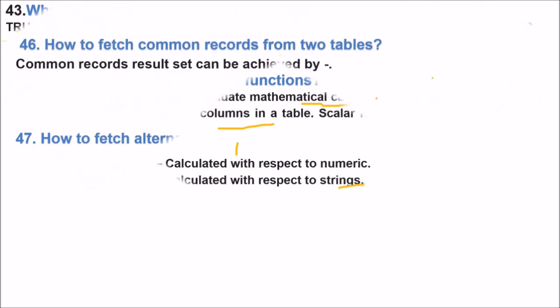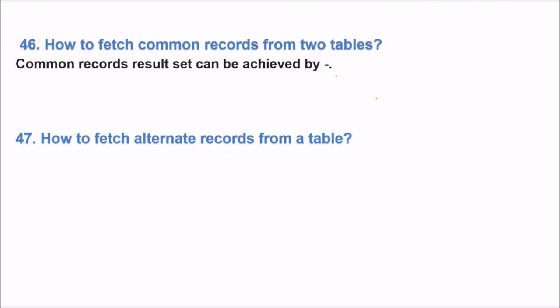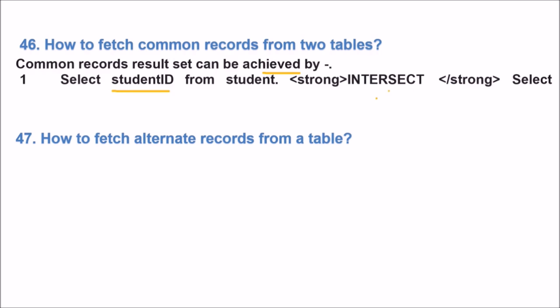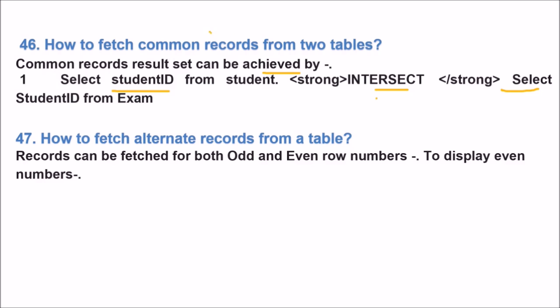The next question is how to fetch common records from two tables. Common records result set can be achieved by fetch common records from two tables: SELECT student id FROM student INTERSECT then SELECT student id FROM exam. This is an example of how you can fetch common records from the two tables.